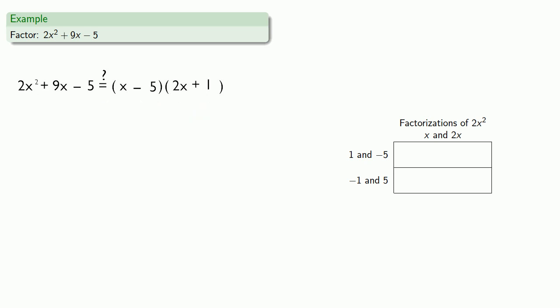This will actually give us a different factorization. What that means is that for every possible pair of factors of c, we have to check two possibilities. So we'll actually split this column to remind us that we have to check both possibilities.